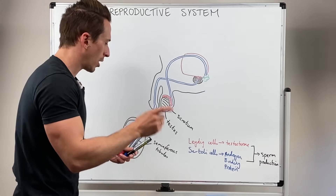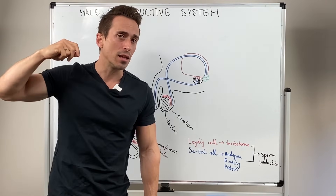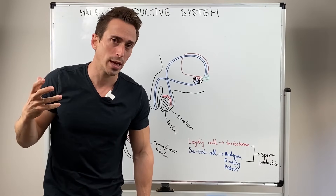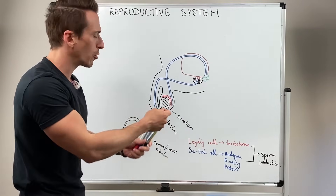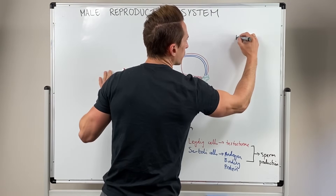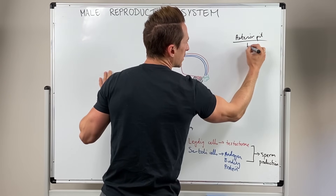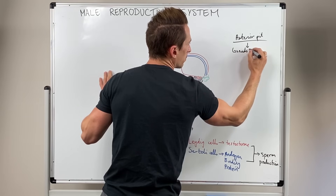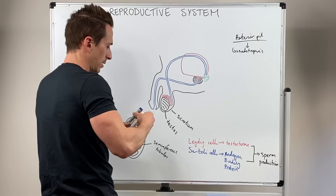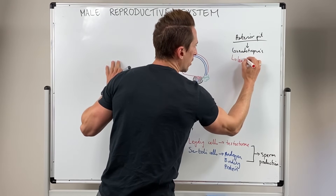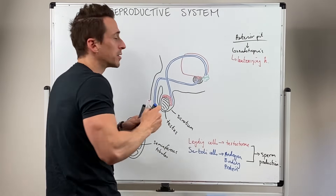There are signals coming from the brain, specifically from a gland that sits underneath the hypothalamus called the pituitary gland. The pituitary gland has two lobes: an anterior and a posterior. The anterior lobe of the pituitary gland releases hormones called gonadotropins. There are two types of gonadotropins: luteinizing hormone and follicle stimulating hormone.